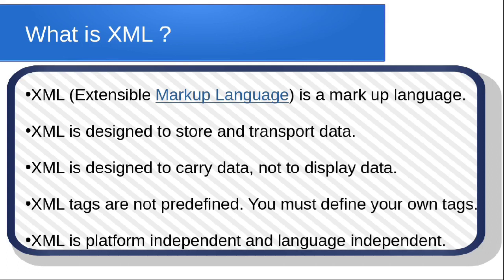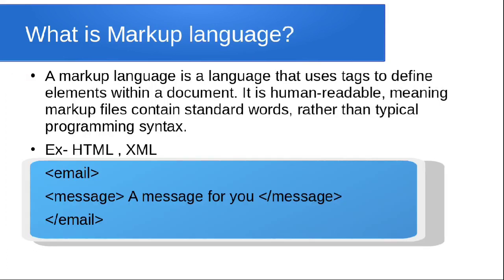A markup language is a language that uses tags to define elements within a document. It is human readable, meaning you can easily understand it just by reading it. XML code is used to specify the formatting using tags. HTML and XML are both examples of markup language.